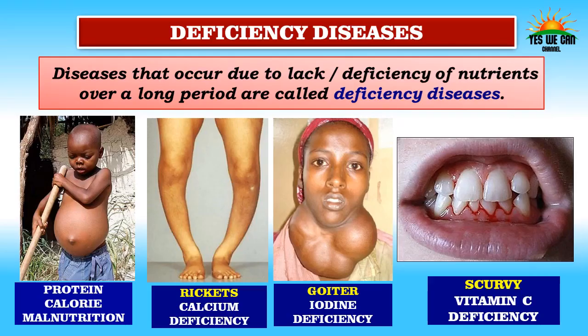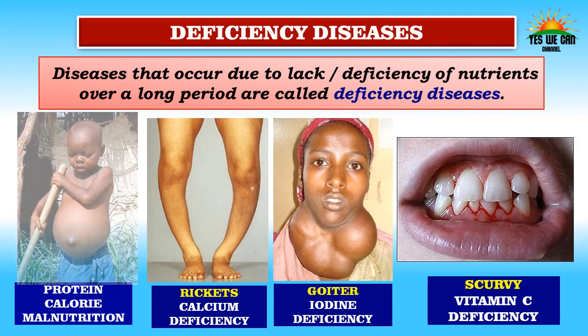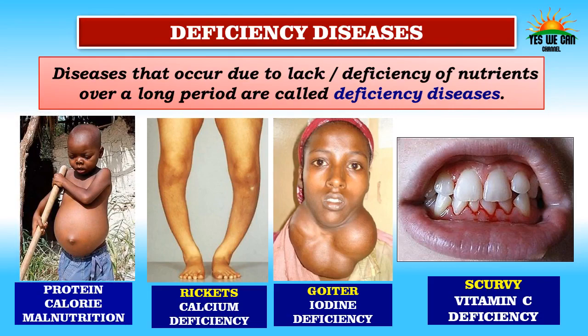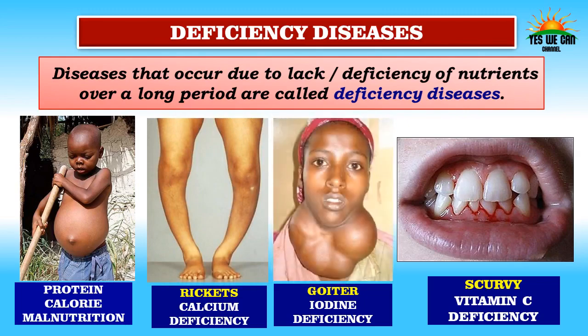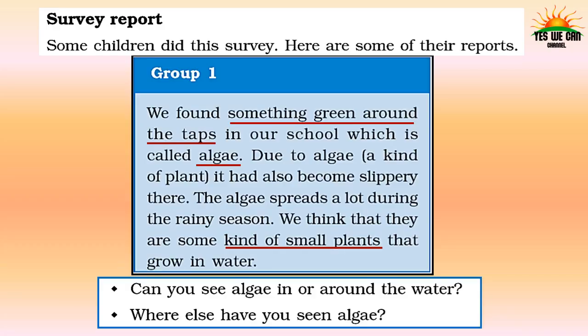Diseases that occur due to lack or deficiency of nutrients over a long period are called deficiency diseases. Some examples are rickets due to calcium deficiency, goiter due to iodine deficiency, and scurvy due to vitamin C deficiency. In chapter 3, protein-calorie malnutrition was also discussed.